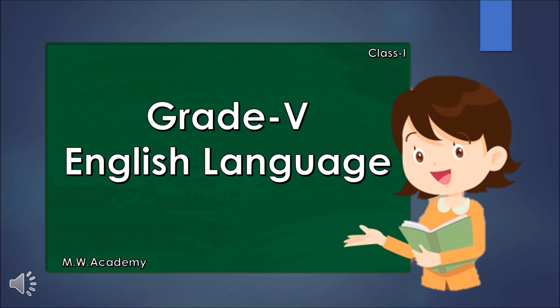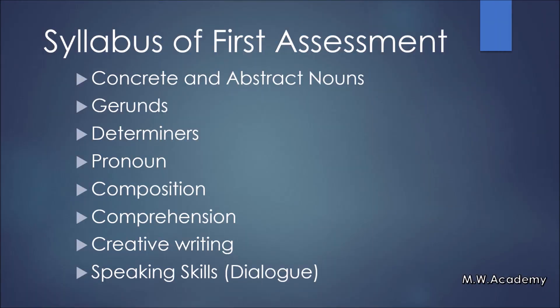Here the syllabus of first assessment is written. Do it in your copy. Okay, what is the first topic? The first topic is concrete and abstract noun. The second is gerunds. Third is determiners. Fourth, pronoun. Fifth, composition. Sixth, comprehension. Seven, creative writing. And eighth is speaking skills which is in dialogue forms.